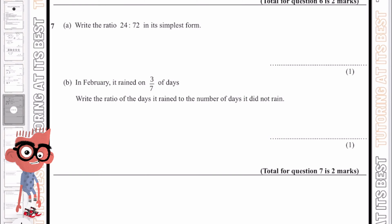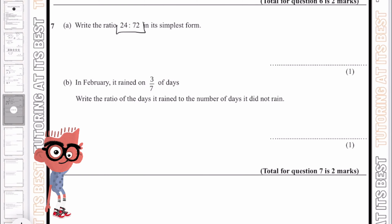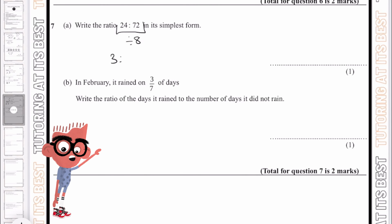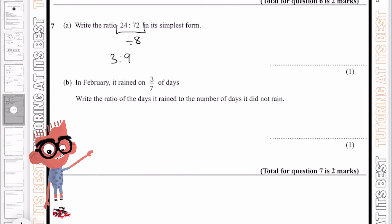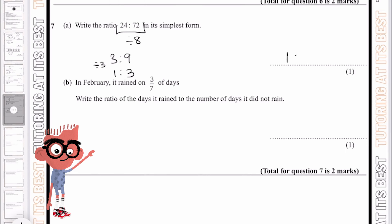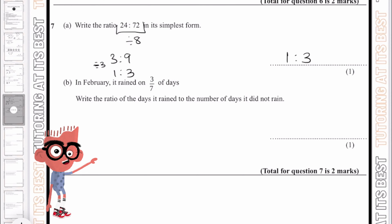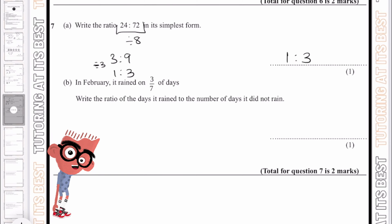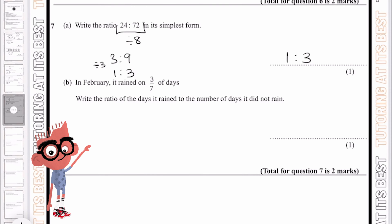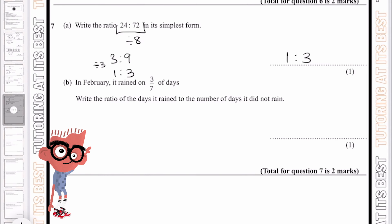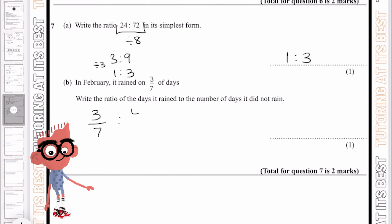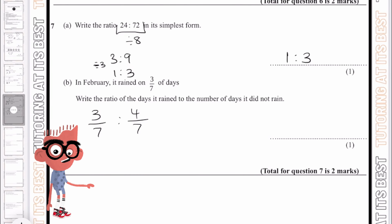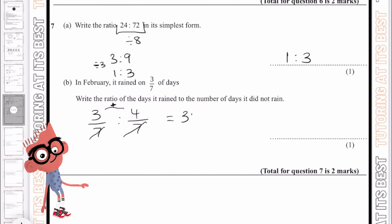Okay, 7a. Write the ratio of 24 to 72 in its simplest form. We know they're both divisible by 8, so dividing both by 8 gives us 3 to 9. Then dividing by 3 gives us 1 to 3 — so our answer is 1 to 3. Part b: in February, it rained on 3 over 7 of days. Write the ratio of days it rained to days it did not rain. We have 3 over 7 for rain, so for it not to rain must be 4 over 7, because they total 7. Crossing out the 7, we're left with 3 to 4.